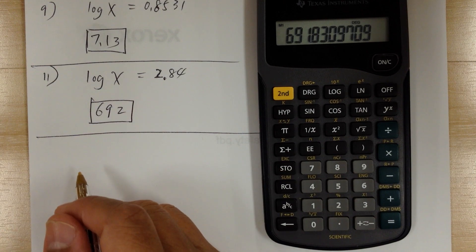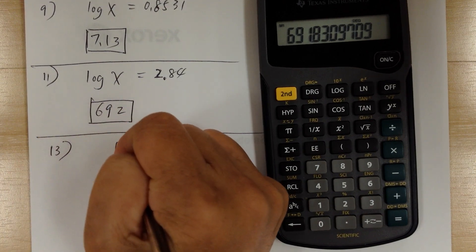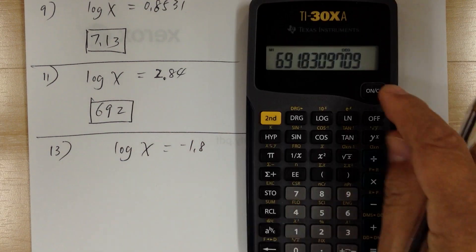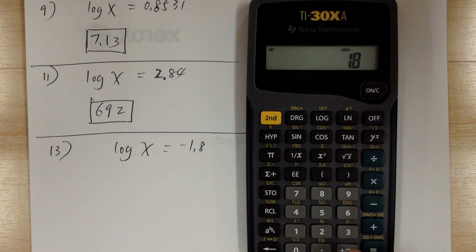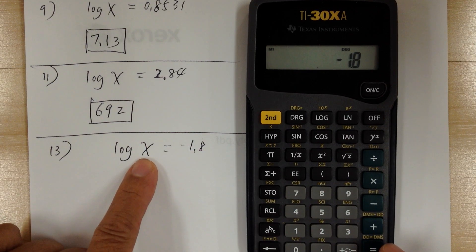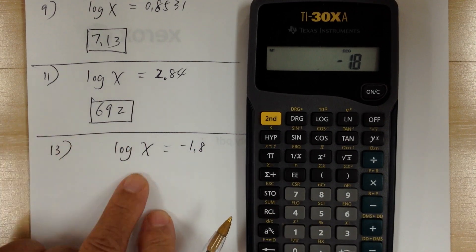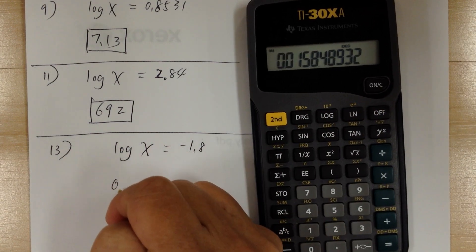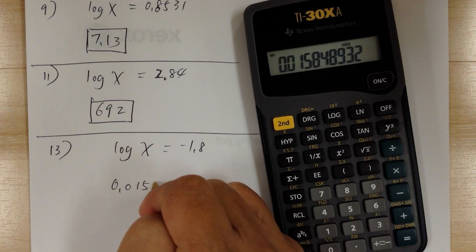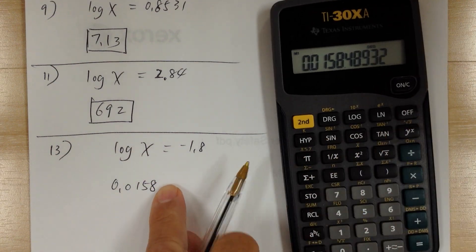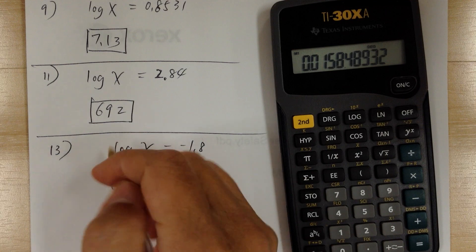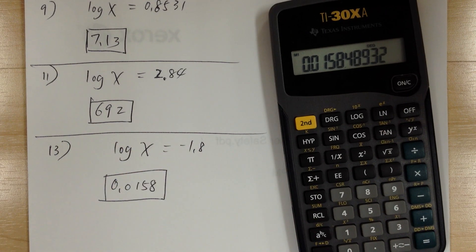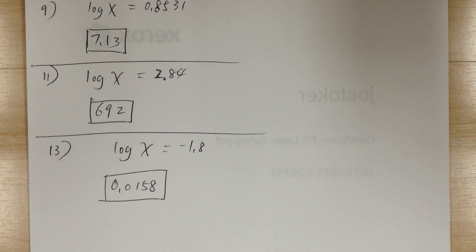Again, to get rid of the log you have to use the second function — second log — and that's how you get x. Number 13: log of x equals negative 1.8. Get your calculator, enter 1.8 negative — to find this number you have to get rid of the log using second function — so this would be 0.0158. The next digit is 4, which is less than 5, so you can just drop it.